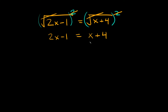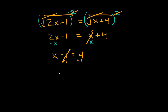Now we're going to get the variables on one side and the numbers on the other. Let's move the variables to the left — subtract x from both sides, those cancel out, and 2x minus x gives us x. So we get x minus 1 is equal to positive 4. Add 1 to both sides and we get x is equal to 5. Not too bad — there's your answer.